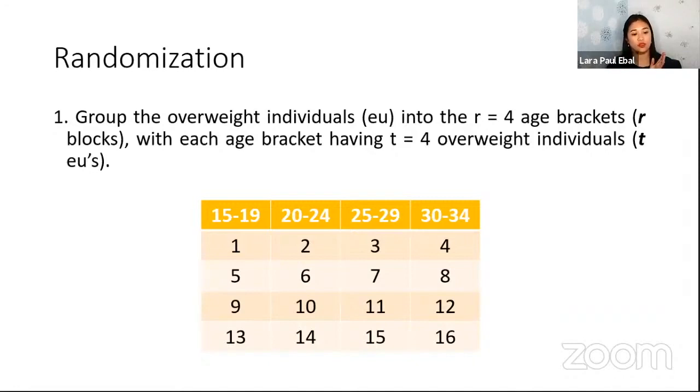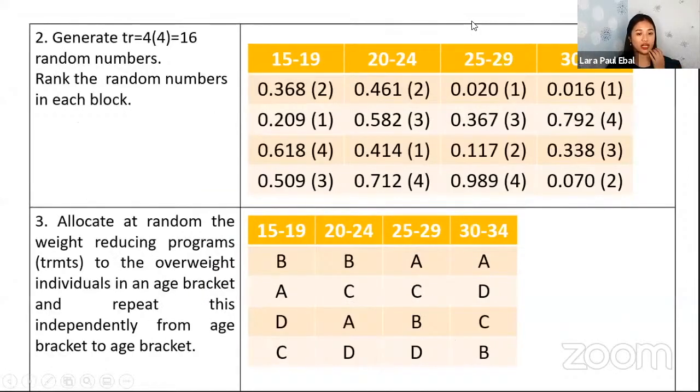So now to illustrate, we go back to this randomization. Paano mag-randomly assigned ng treatment? So these four programs. These age brackets are already set, so fixed. Blocks are fixed. So we have 15-19, 20-24, 25-29, 30-34 years old. For this first block, we assign. We set numbers first: 1, 2, 3, 4. So ganun lang yung arrangement, ascending order.